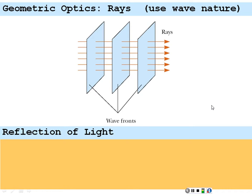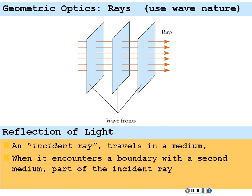If we have reflection of light, the incident ray will travel in some medium. When it encounters a boundary with a second medium, part of that incident ray will be reflected back into the first medium. This is what we define as the reflection of light — when the first ray hits a boundary, at least part of it goes back into that first medium.